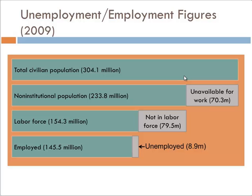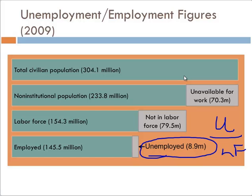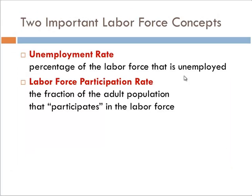The unemployment rate is equal to unemployed divided by the labor force. When it says it's 8% of the population, it's not 8% of the population — it's 8% of the labor force. All of these different categorizations cause controversy in the accuracy of measurement of unemployment. The unemployment rate is the percentage of the labor force that is unemployed, not the percentage of the total population. The labor force participation rate is the fraction of the adult population that participates in the labor force — essentially that ratio of the labor force divided by total civilian population. If that drops too low, maybe economic times have been bad and people are really discouraged.